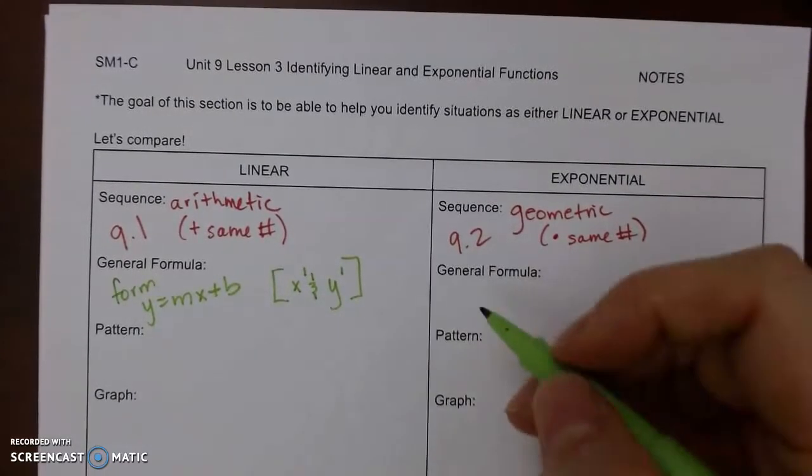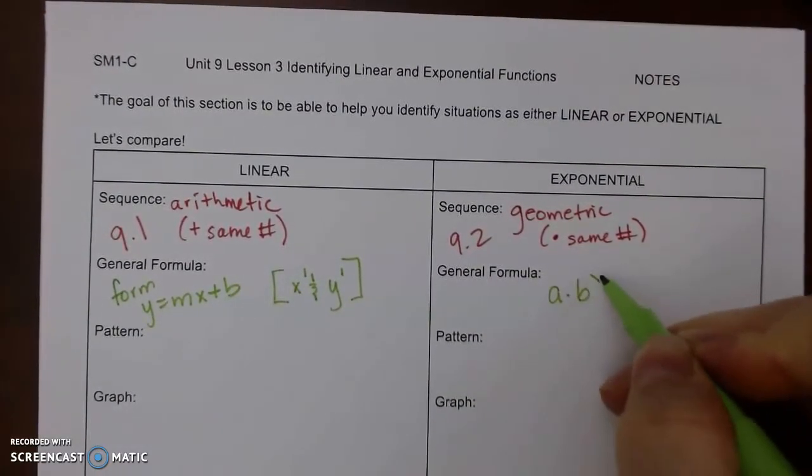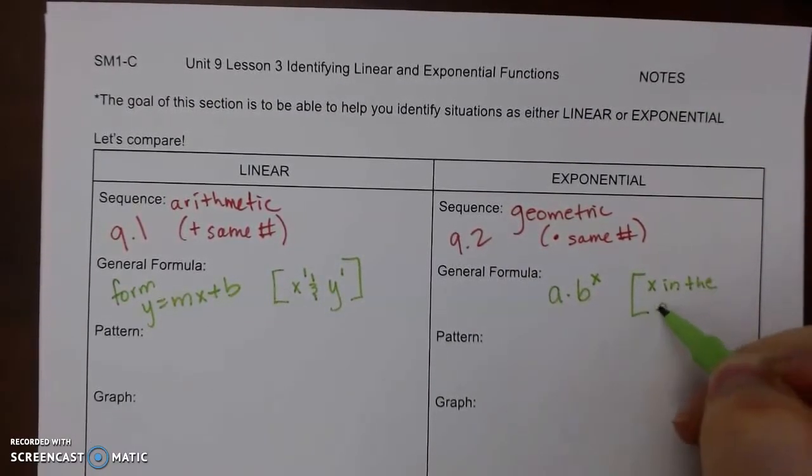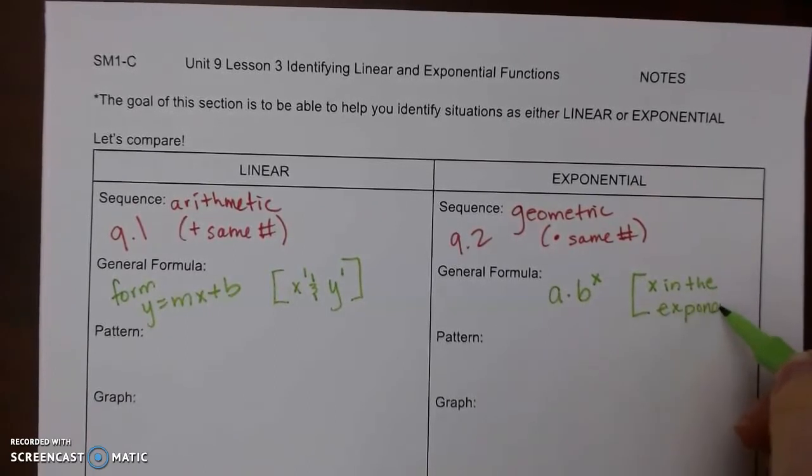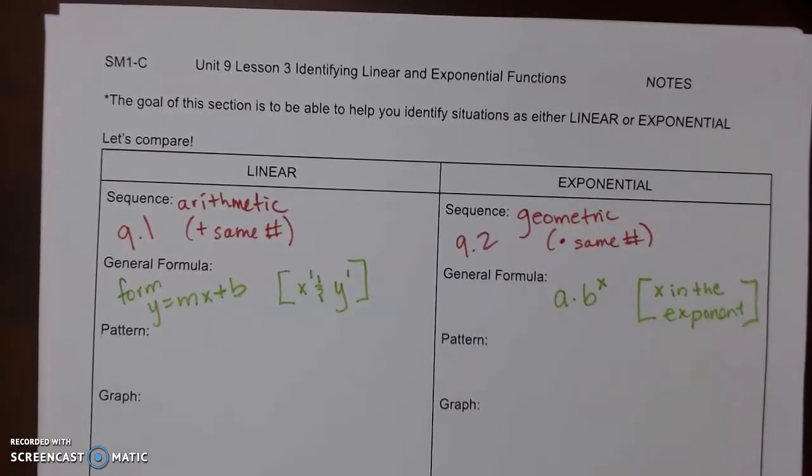For exponential, it's going to look like a times b to the x. And what you really want to look for is x is in the exponent. There might not be an a number, that's just the general formula.